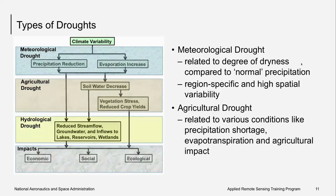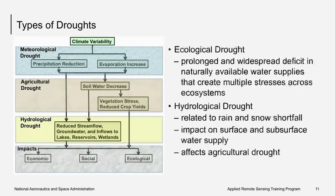Because of meteorological drought and the unavailability of enough water, agricultural drought sets up. That is due to soil water decrease, which eventually results in vegetation stress and reduction in crop yields. Agricultural drought follows meteorological drought and can occur about six months later, or a season later. Finally, hydrological drought occurs because of reduction in precipitation, but after more than six months, there is reduction in stream flow and runoff. Groundwater also gets depleted and reservoir and lake levels go down. Hydrological drought results from long-term persistent deficit of rainfall and usually occurs longer than six months after meteorological drought sets up.